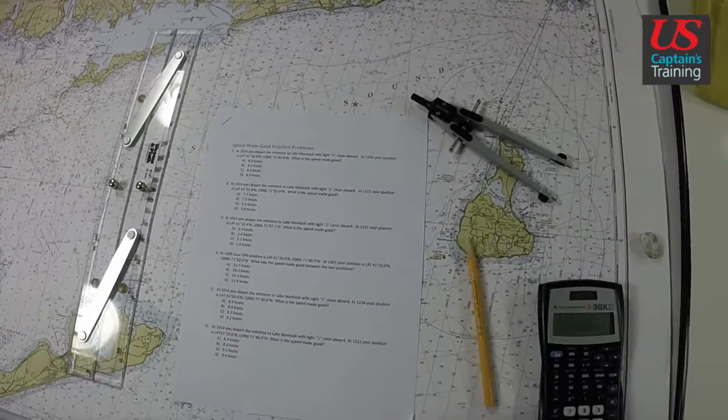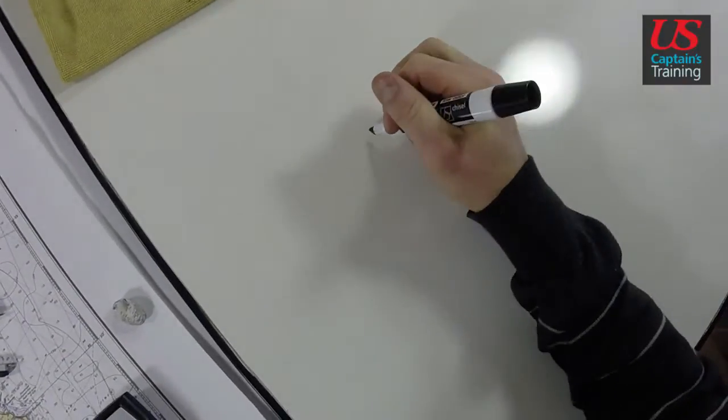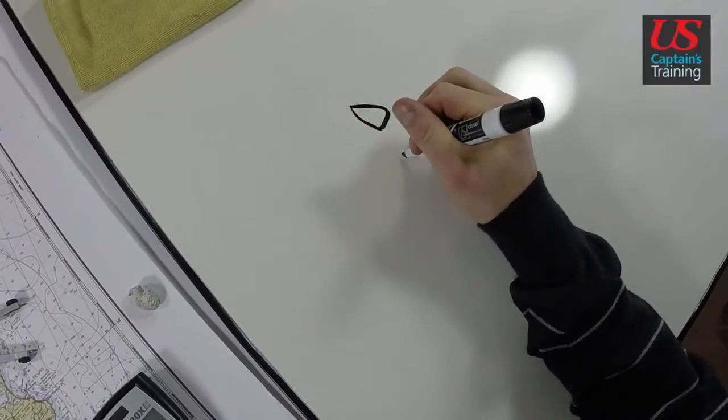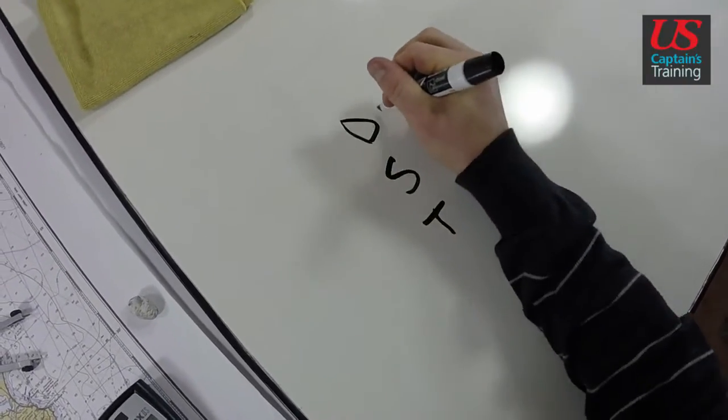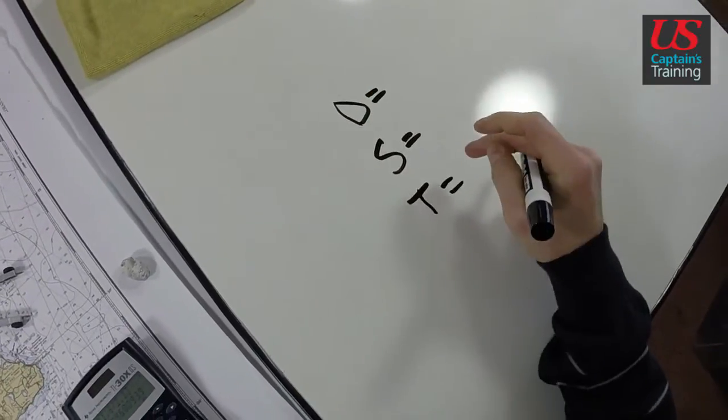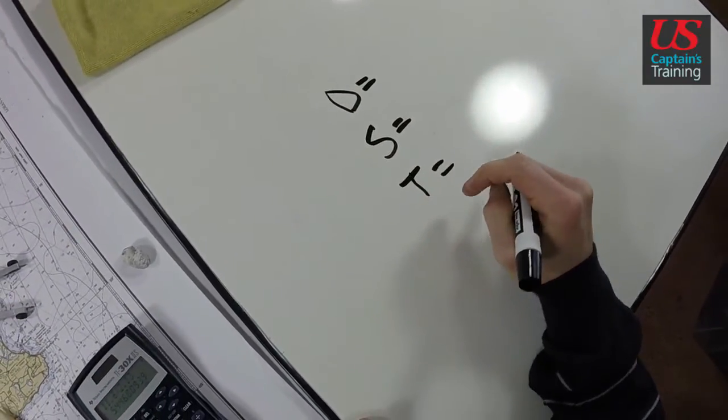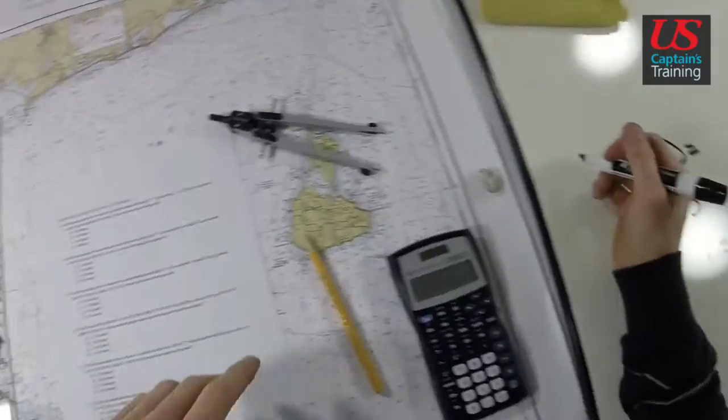We are going to use distance, speed and time in this problem. I'm going to write those down: distance, speed and time. Distance we're going to get from the chart, speed is what we're figuring out, and time was given in this problem.